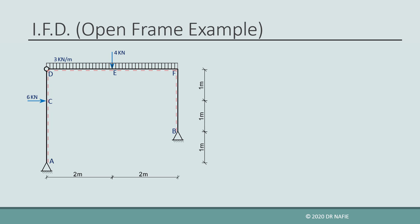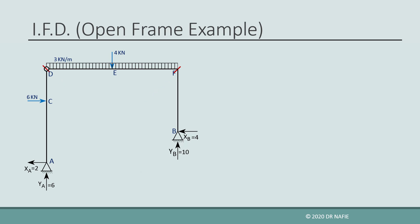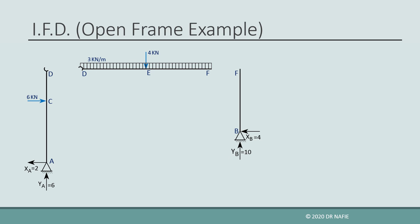Now let us work on the open frame example. As always, the first step is to evaluate the reactions. For a detailed explanation about the reactions and how to evaluate them, refer to the lectures on reactions listed in the description. The easiest way to draw the internal force diagrams for a frame is to divide the frame into a series of beams. For our example, we'll cut the frame at points D and F to produce three beams: AD, DF, and FB.